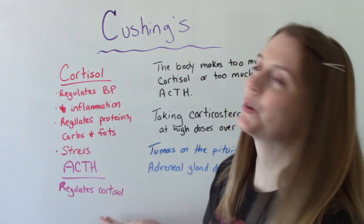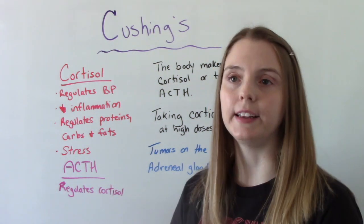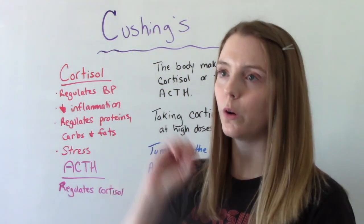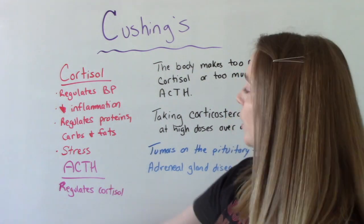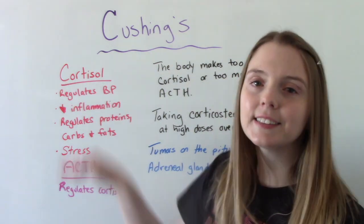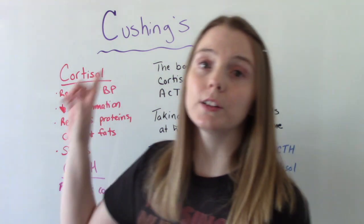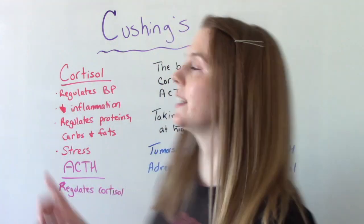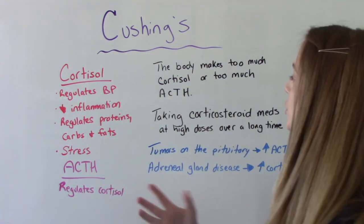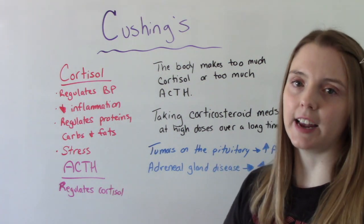ACTH regulates cortisol. It decides if we're going to release a lot or a little or a normal amount. If there's a problem with these things, now we have Cushing's. Cushing's is when the body is either making way too much cortisol or way too much ACTH.